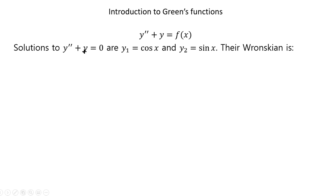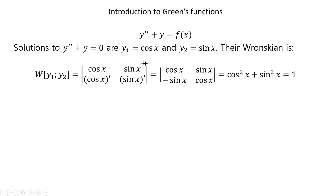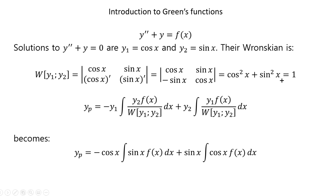The solutions are cosine x and sine x — if you move y to the other side it says you need a function whose second derivative is negative of itself, and cosine x and sine x satisfy that. The Wronskian is just one, because cosine² + sin² = 1. Therefore, replacing the denominator by one, with y₂ = sine x and y₁ = cosine x, you end up with this simple formula.